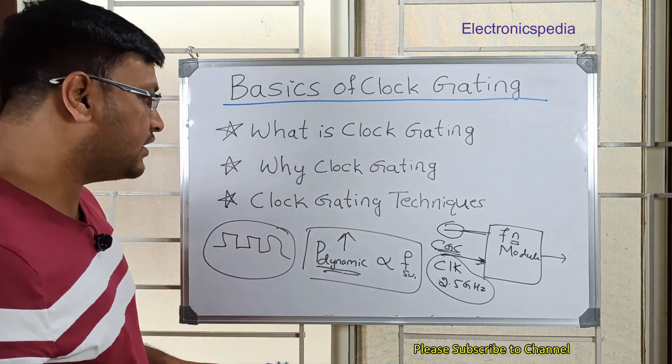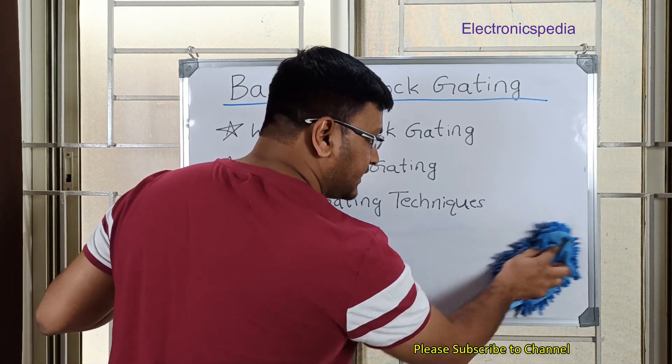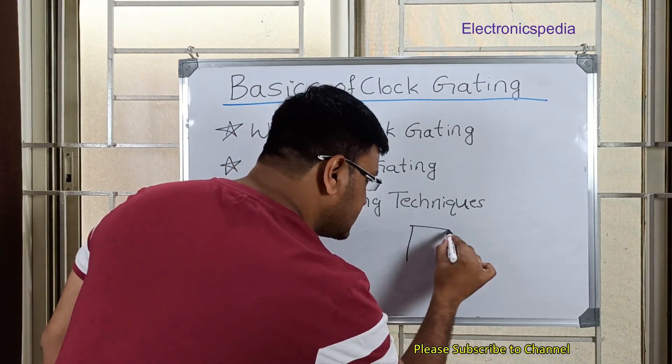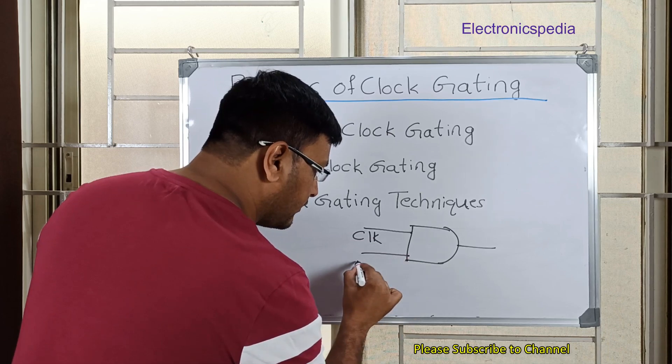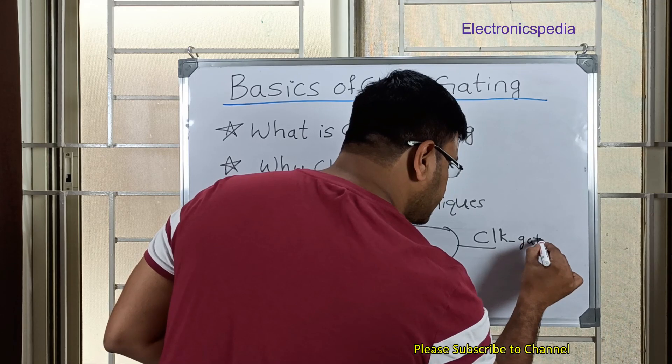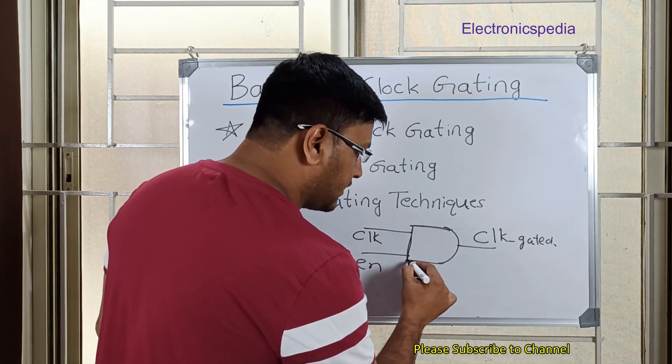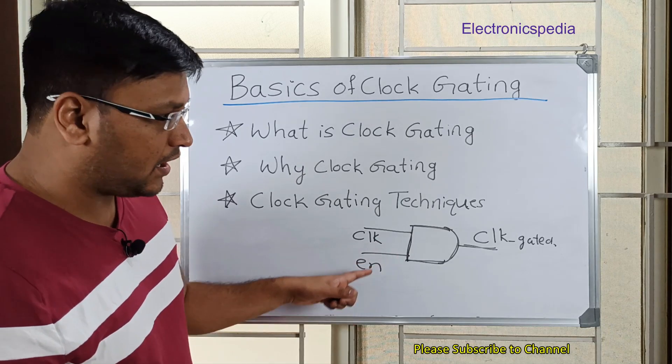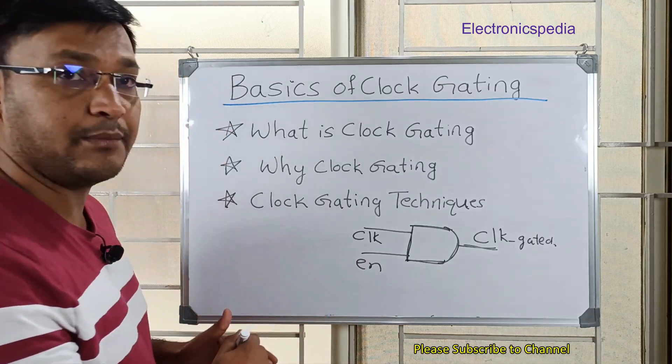So now there are different clock gating techniques available. If I say clock gating, the simple thing that comes to everyone's mind is this is the module like an AND gate. So you have this clock, you have this enable, and this is a clock which is gated. So this is the common clock gating cell that comes to one's mind if I say about the CGC. Now let's try to understand how this clock gating technique actually works with the help of the waveforms.